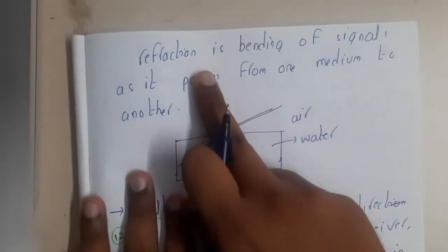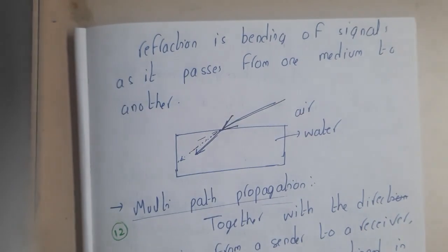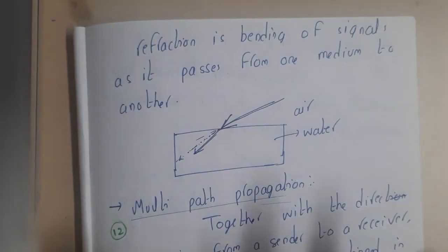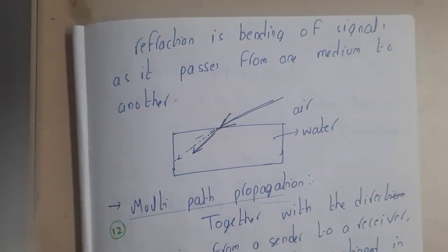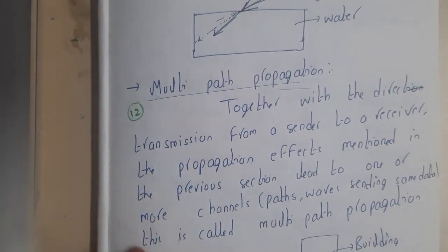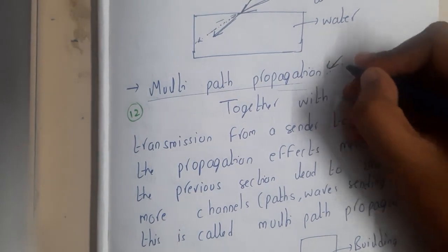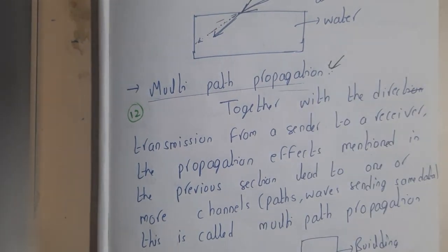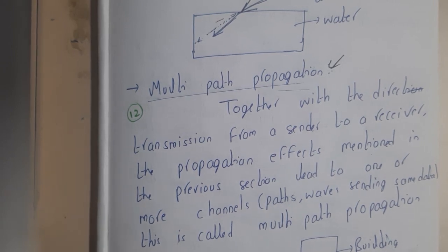So refraction is the bending of a signal as it passes from one medium to another. I hope everyone got a basic idea about all these issues. In the next lecture, we will be discussing multipath propagation. Thank you, thanks for watching.